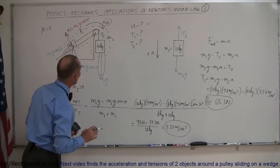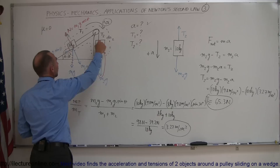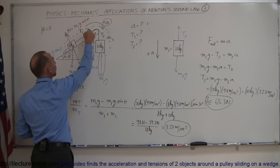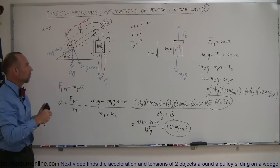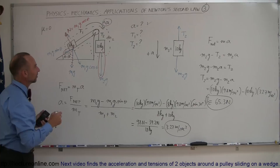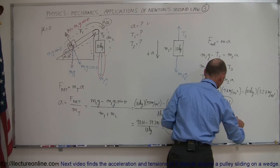Now, what about T1? It turns out T1 should equal T2. Why? Because it's a single string connected from one mass to the other, so whatever the tension is at one end must be the tension at the other end — assuming no friction on the pulley and the pulley has negligible mass, so we don't need to worry about moment of inertia. Therefore T1 equals T2, which is 65.3 newtons.